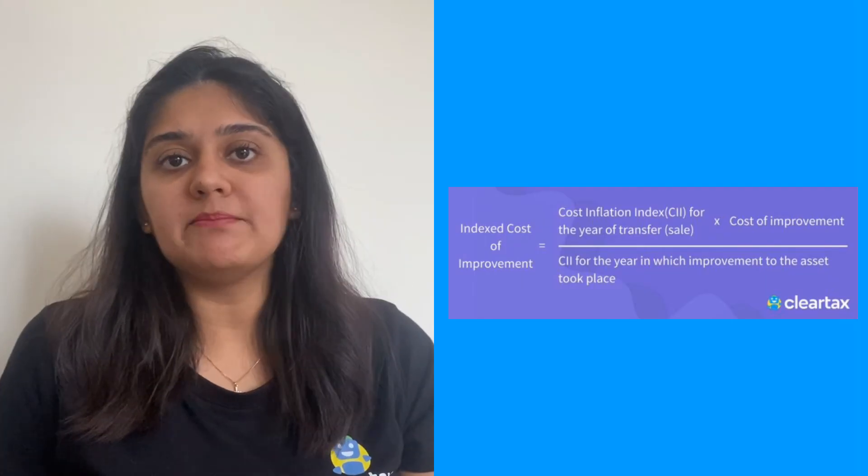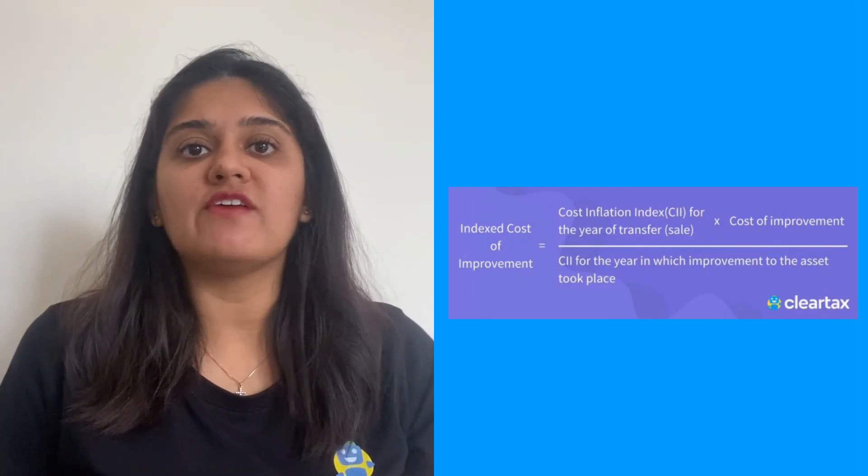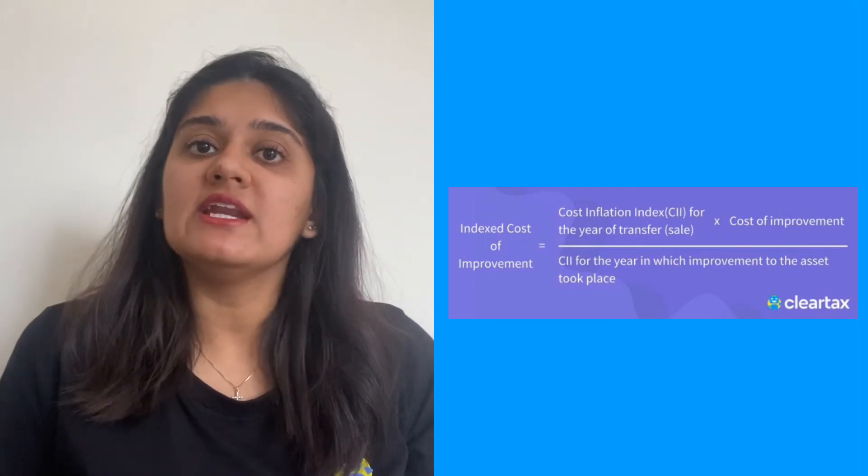However, any improvement made after 1st April 2001 needs to be ignored. The second point to note is, in case of a property being received through a will, the year to be considered is the actual year in which the property was received, and the year in which the property was purchased should be ignored. I hope you understood what a cost inflation index means and how to calculate it on your house property.